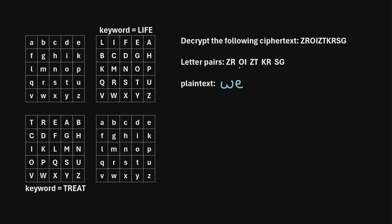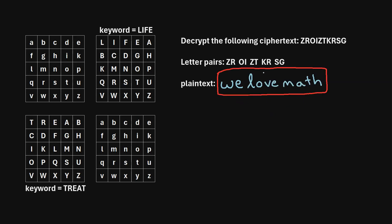We're done with that letter pair and can move on to the next. Repeating this exact same process for each of the pairs, we find that the plaintext was "we love math." One thing to note is that when you're decrypting ciphertext, you have to know what the original four squares were that were actually used to encrypt the text in the first place. Those were just a couple quick examples of how to encrypt and decrypt text using the four-square cipher.